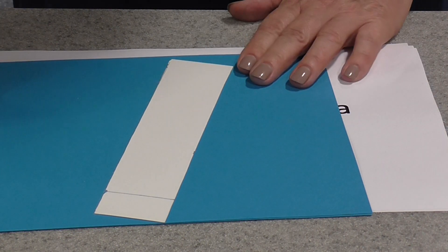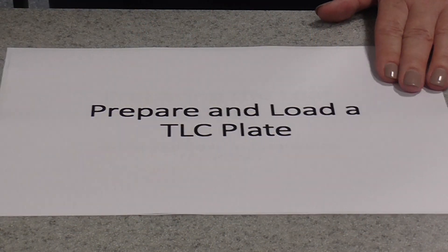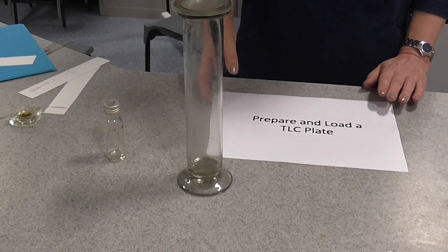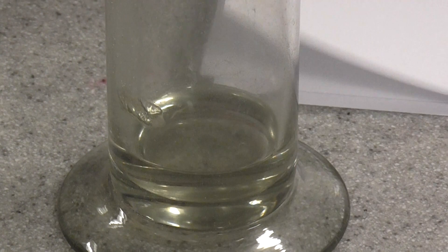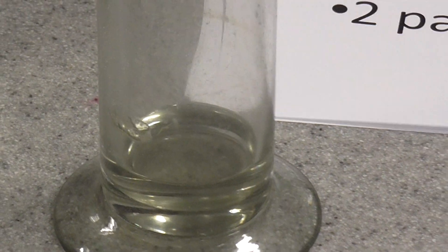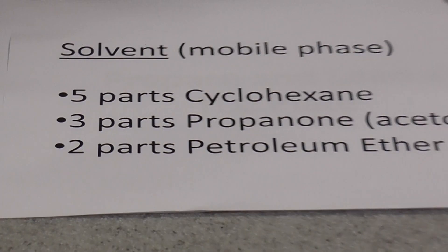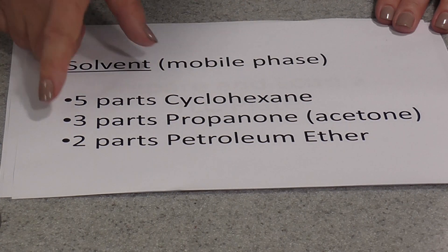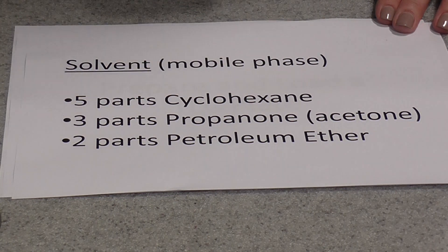While you're doing this, the next thing you could do while waiting for your leaves to soak is put your solvent, which will be the mobile phase, into whatever vessel you're using for your chromatography. I'm using a gas jar here. Now into the bottom of that gas jar, I've placed my solvent. The solvent in this case is five parts cyclohexane, three parts propanone or acetone, and two parts petroleum ether.